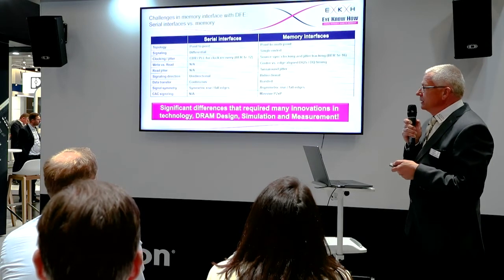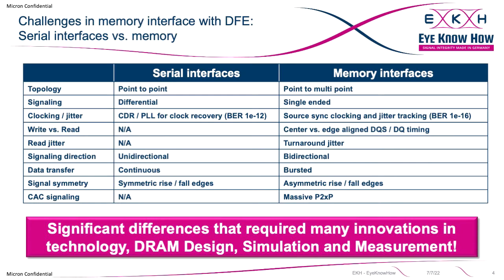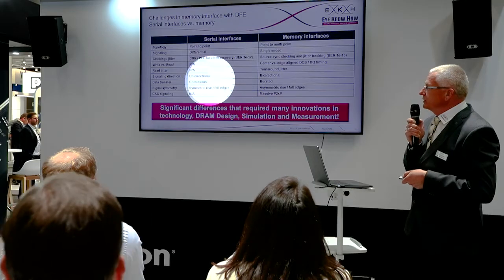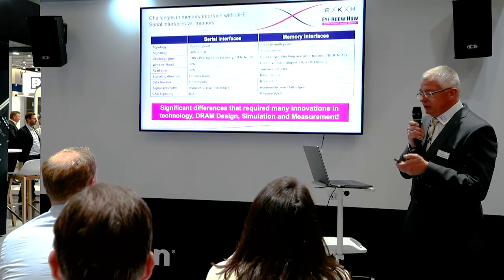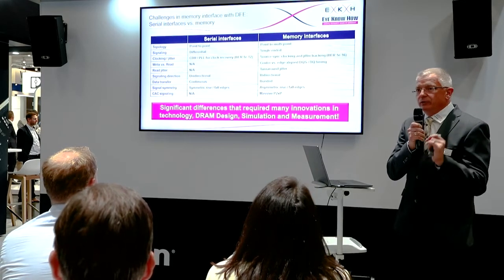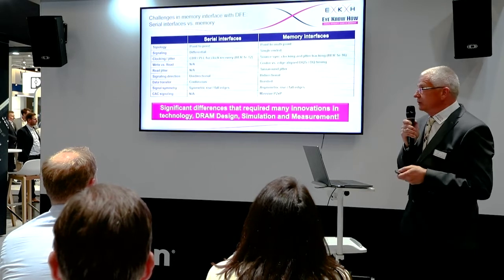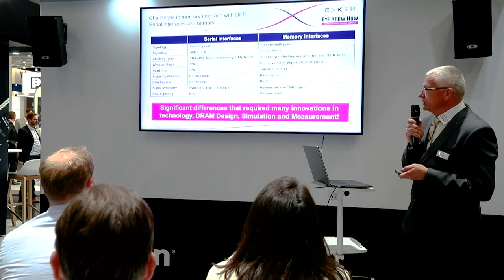The signaling direction — unidirectional versus bidirectional — is different. We have a continuous data stream on serial interfaces while we have bursted data on memory interfaces. The asymmetric rise and fall times seen on memory with high-level termination versus symmetric rise and fall time edges for serial interfaces with differential signaling will cause a lot of trouble for a DFE equalizer. So we really have a lot of new features implemented just to get memory interfaces working with a decision feedback equalizer.